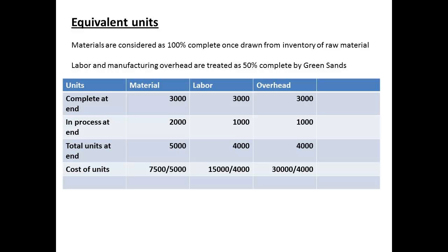For the costs of the units, we need the figures for costs determined earlier, then divide these costs by our units. For materials, we have $7,500 divided by 5,000. For labour, $15,000 divided by 4,000. And for overhead, $30,000 divided by 4,000. We now have our costs per unit: for materials the cost per unit is $1.50, for labour it is $3.75, and for manufacturing overhead it is $7.50. So the total cost per unit is $12.75.